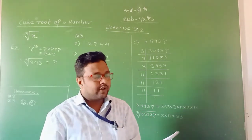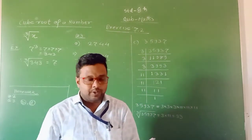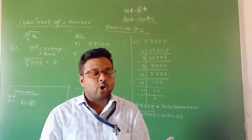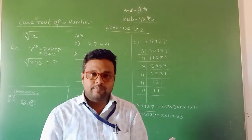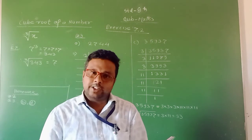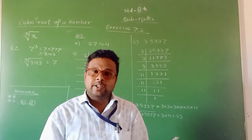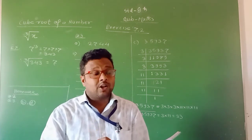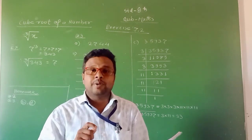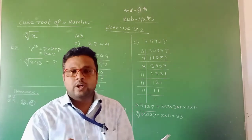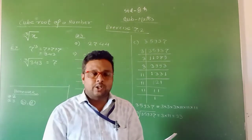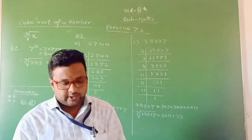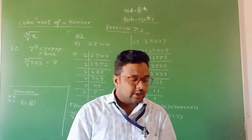Statement D: For positive integer P, P cube may not be greater than P square. Yes, it is possible. If a negative integer is there, their cube is negative, and it is smaller than P square. We know that the square of any number is always positive. Therefore, this statement is true.